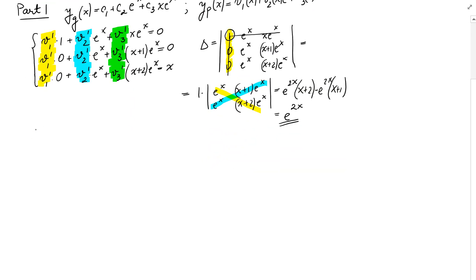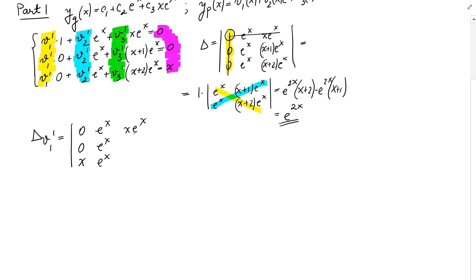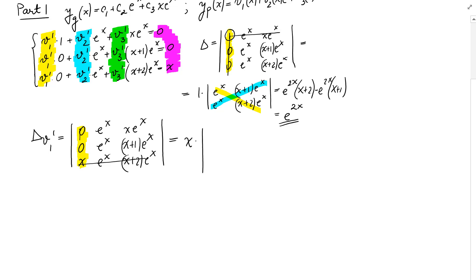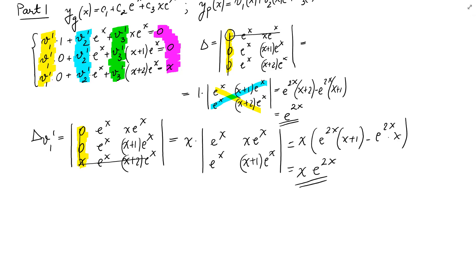Now delta_V1' is formed by replacing the first column — the yellow one — with the right-hand side column, giving entries 0, 0, x in the first column, and then e^x, e^x in the second, and x e^x, (x+1)e^x, (x+2)e^x in the third. Expanding by the first column again due to the zeros, we get x times the remaining 2×2 determinant. So delta_V1' equals x e^(2x).